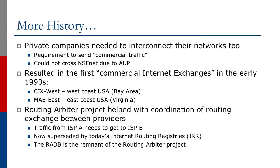As the Internet developed, private companies needed to interconnect their networks too. They could certainly access the NSFnet through these network access points, but these network access points prohibited the use of commercial traffic across the interconnect, so they could not use the NSFnet. For example, a commercial operator on the east coast of the United States wanting to talk to a commercial entity on the west coast could not cross the NSFnet — they needed their own way of getting there. This resulted in the first commercial ISPs being formed, and of course the first commercial Internet exchanges being created as well.